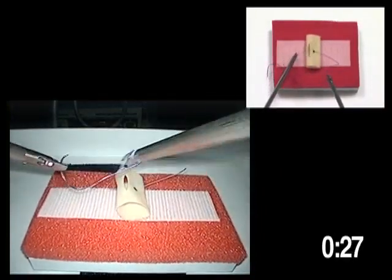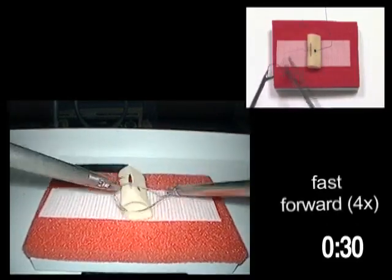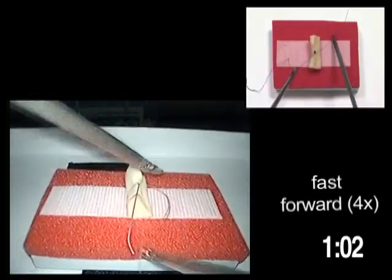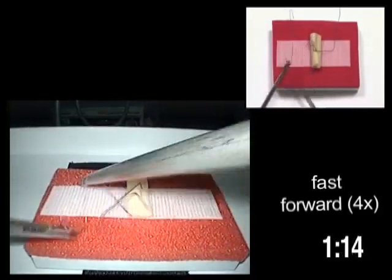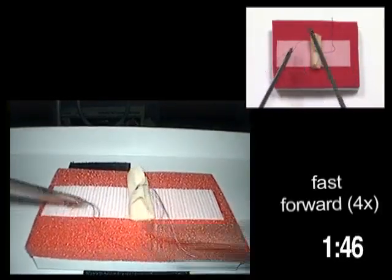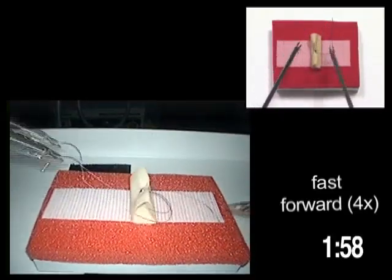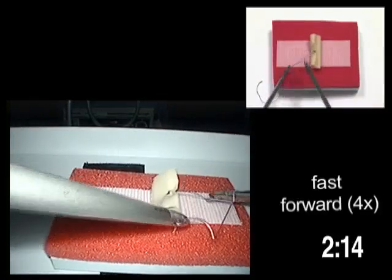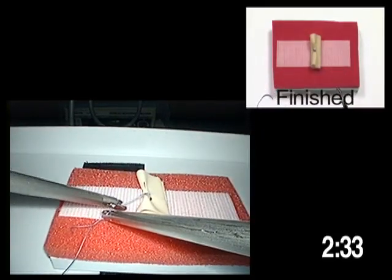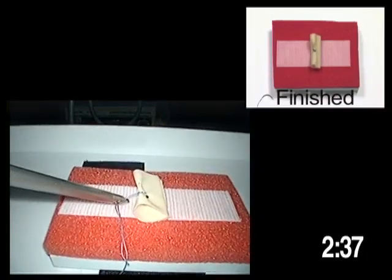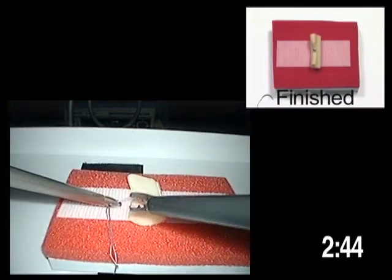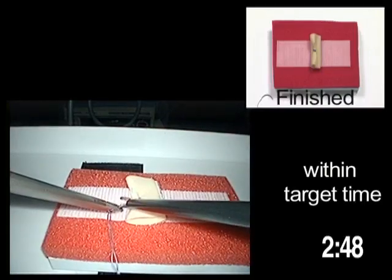Make two single throws in opposite direction. Make sure the knot is tied securely. Open the blades of the scissor. Slide over the suture towards the knot and cut. Time stops when the suture is cut.